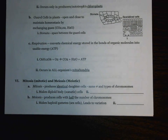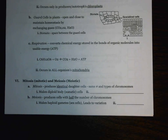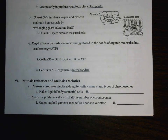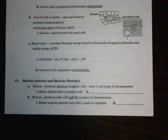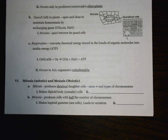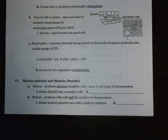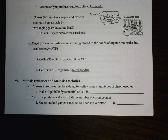Hey guys, take out your review packet and let's turn to the page that says mitosis and meiosis right here at the bottom of the page. Now remember, mitosis and meiosis are both going to be happening inside of our cells and they're an example of cell division.